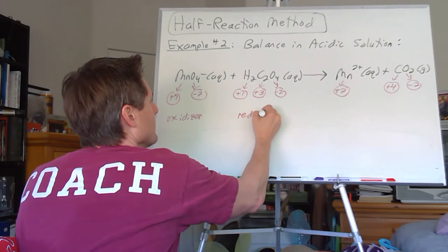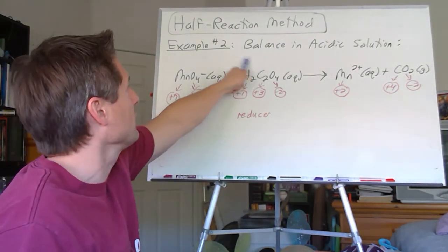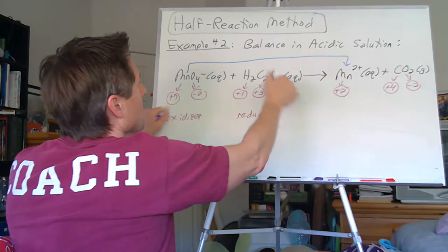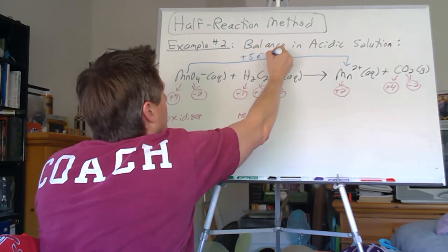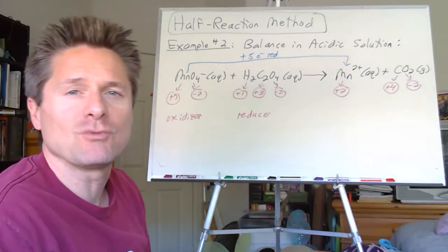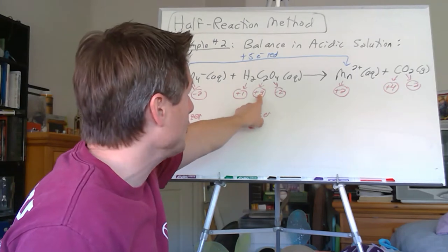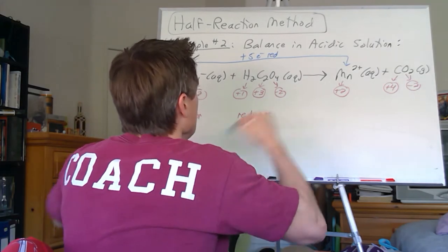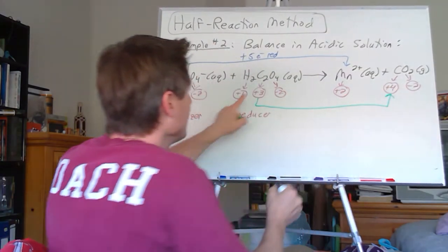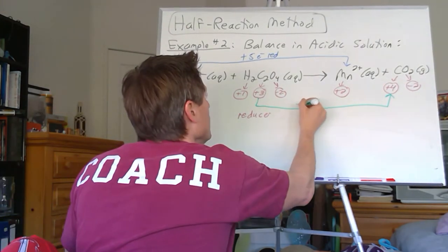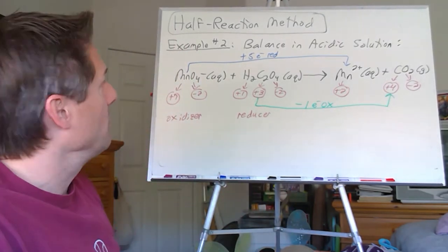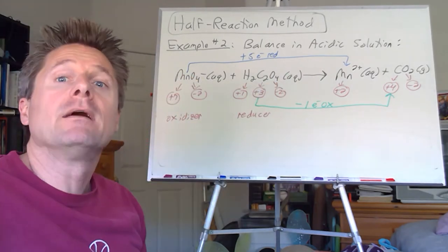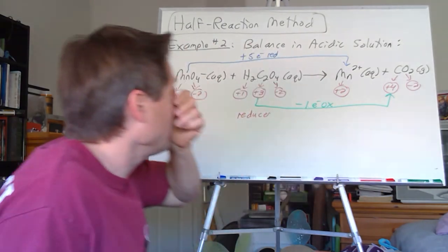Now let's connect those together and get our reduction and oxidation. This will be my reducer. The electrons are going to be going in that direction. Manganese is going from plus seven to plus two, so it must be gaining five electrons in that reduction. When we do the half reaction, we'll have five electrons on the left-hand side. For the carbon — each carbon is going from plus three to plus four. To go from three to four, you lose one electron, so we're losing one electron in the oxidation of the carbons. Electrons go from the reducer to the oxidizer — manganese is being reduced, carbon is being oxidized.